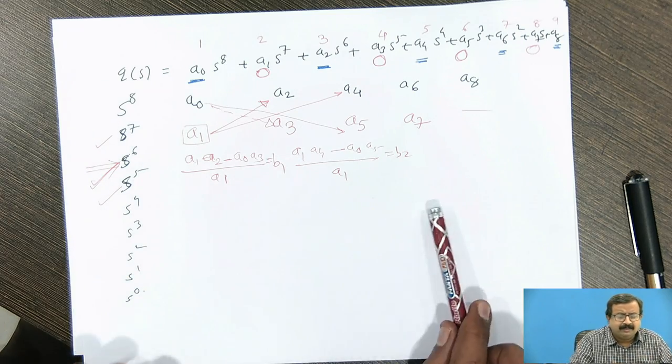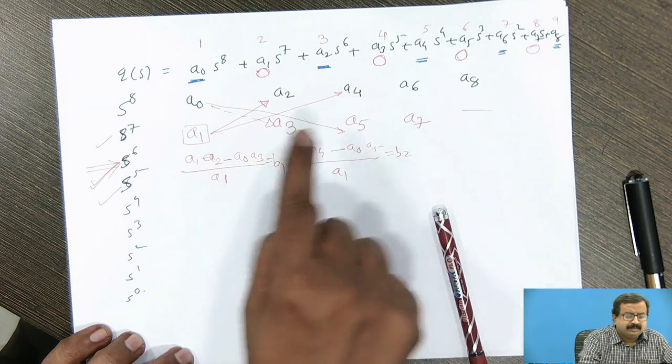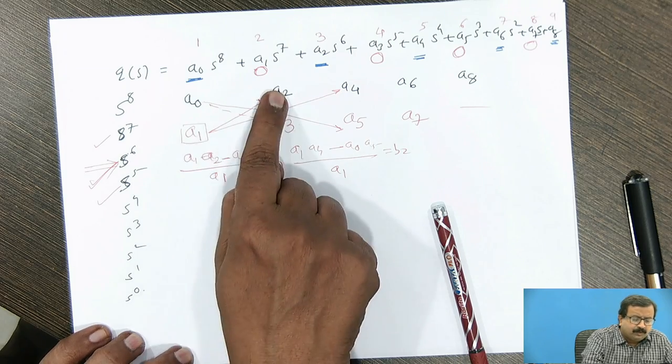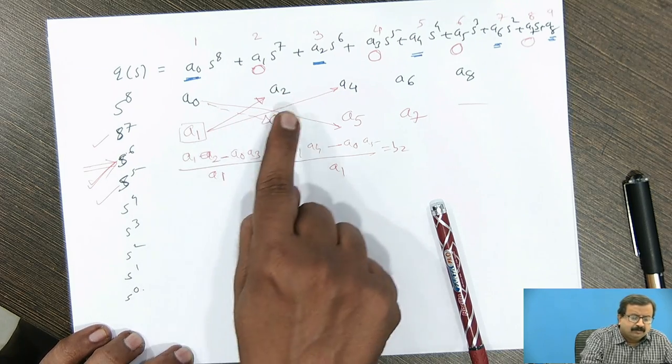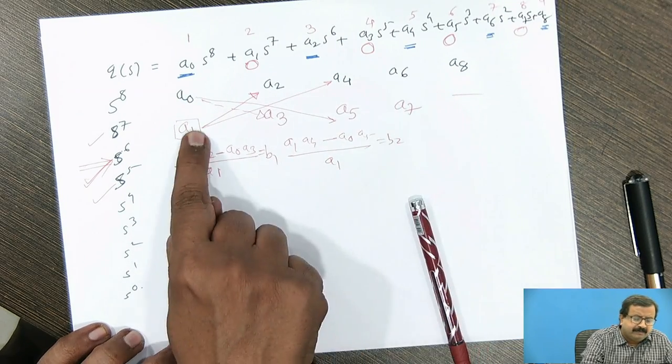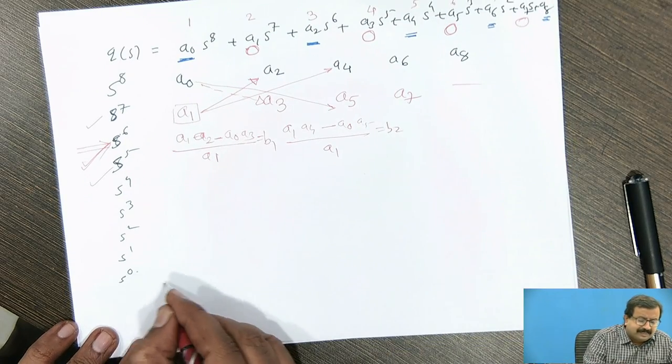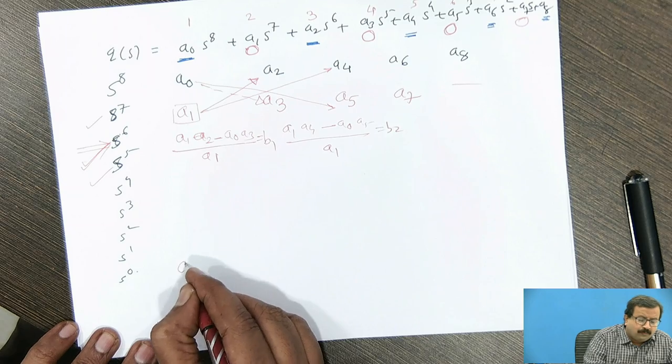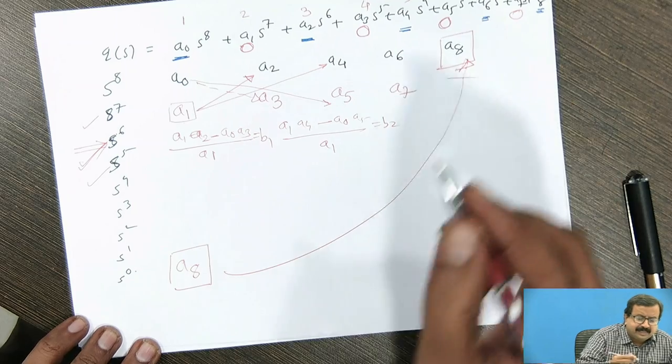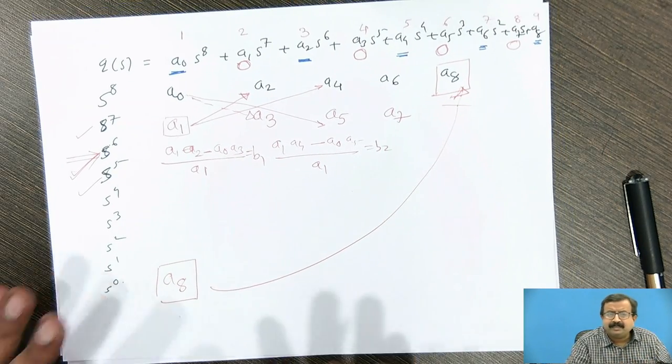So you can very easily prepare the Routh's table and do the calculations. So this is just the structure I have given, very simple. First write odd number terms coefficients, then even number coefficients. Then for this third row, a1 times a2 minus a0 times a3 divided by pivot element. For second term, a1 times a4 minus a0 times a5 divided by a1. Third, a1 times a6 minus a0 times a7 divided by a1 and likewise. What will happen? The last answer, S0 will always be equal to a8, remember. So this is your check that you can make. If you get this a8 here, then your table preparation is correct. Otherwise, there is some mistake in the calculation.